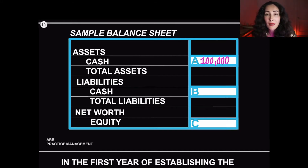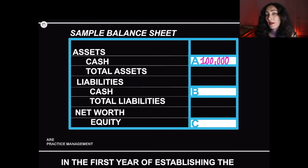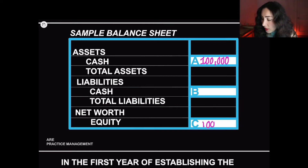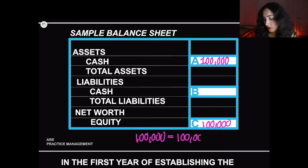We haven't been given anything in this problem that says we're losing money or owe money, so it's not going to go in box B. Here we have net worth, which is shareholder equity or the amount of capital invested by the owners. Would the $100,000 be equity? Yes — the $100,000 is coming straight from the owner's own savings, invested totally into the business, and therefore the business owes $100,000 back to the architect. So I would write the $100,000 under equity.